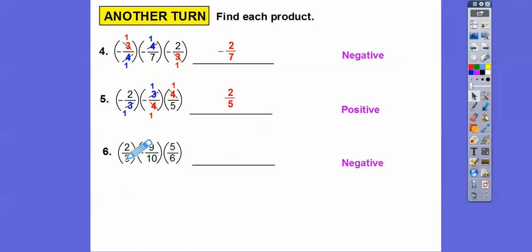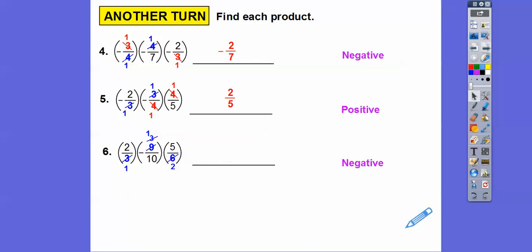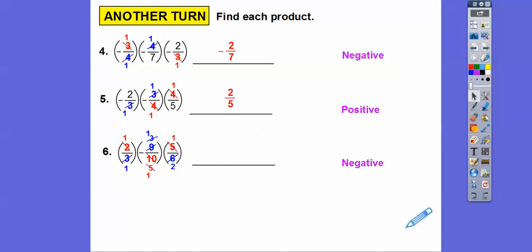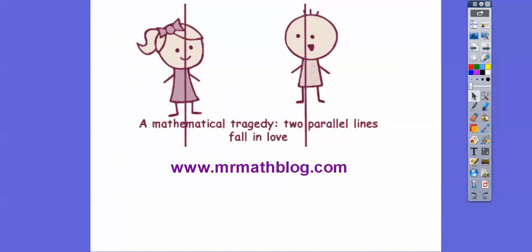For the last one, first cancel: three goes into three once and into nine three times. Then the remaining three cancels with six, making one and two. Next, two goes into two once and into ten five times, giving one and five; that five then cancels with the five to make ones. The answer is negative — only one negative — so one times one times one over one times one times two is negative one half.